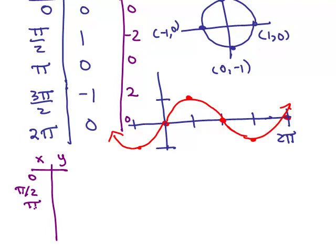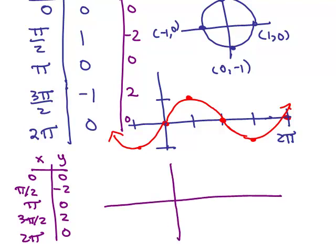0, pi over 2, pi, 3 pi over 2, 2 pi. I just have now 0, negative 2, 0, 2, and 0, and so I'm going to have to go up 2 and down 2 on my y-axis, and my x-axis is the same. And now we're going to be ready to graph this.